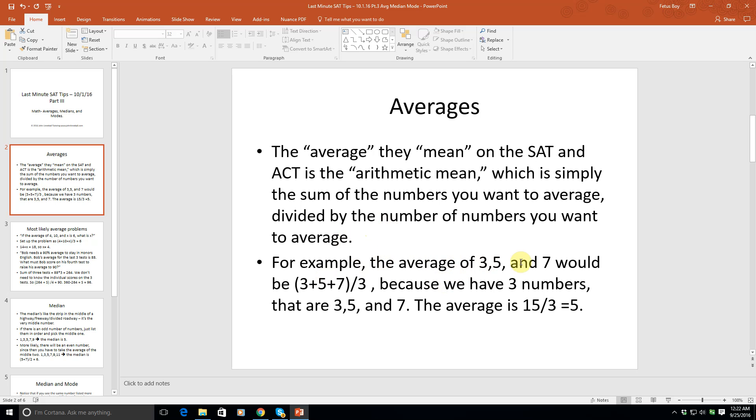For example, the average of 3, 5, and 7 would be (3+5+7)/3 = 15/3 = 5. You could also tell by looking at the numbers that 5 is exactly in the middle of 3 and 7, so that's the average.